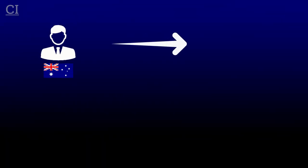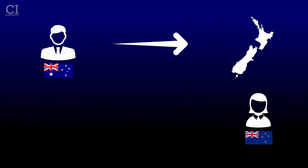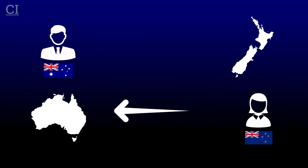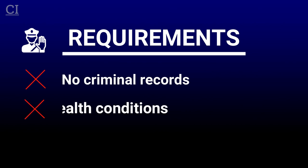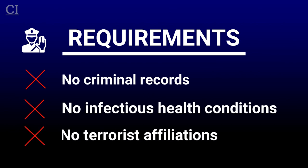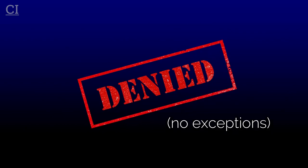But there are restrictions. If an Australian citizen wants to live and work in New Zealand, or a New Zealand citizen wants to live and work in Australia, there are strict requirements that must be met. The individual must have no serious criminal convictions, no infectious health conditions, and no affiliations with terrorist organisations, just to name a few. And if they fail to meet any of these requirements, they are denied entry to the country with no exceptions.